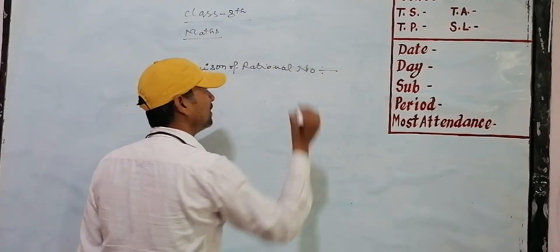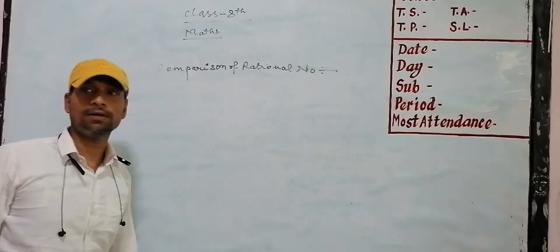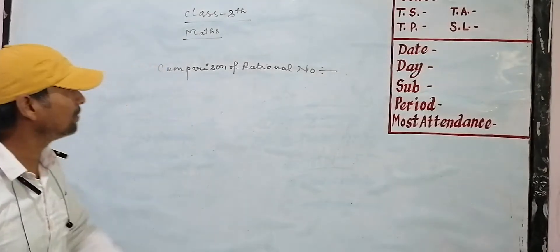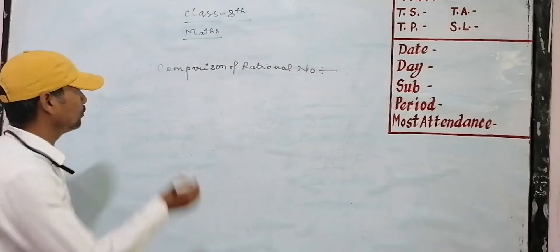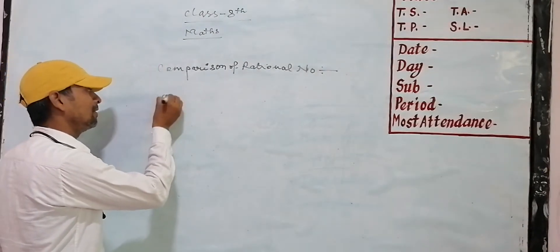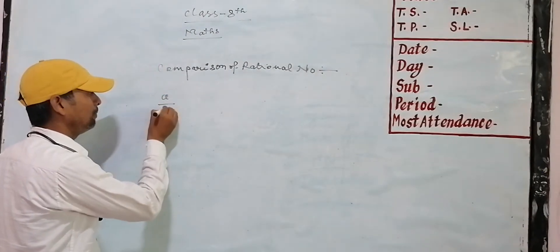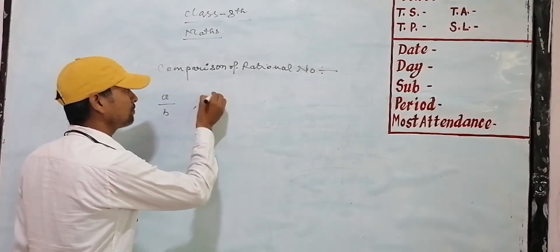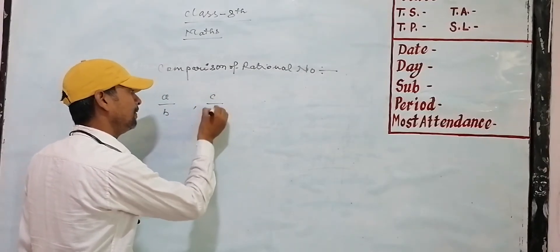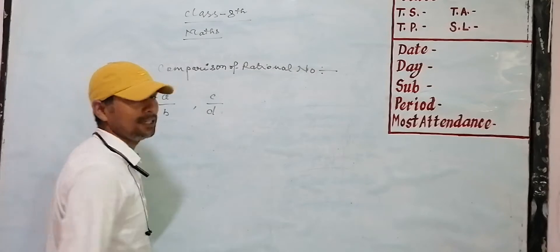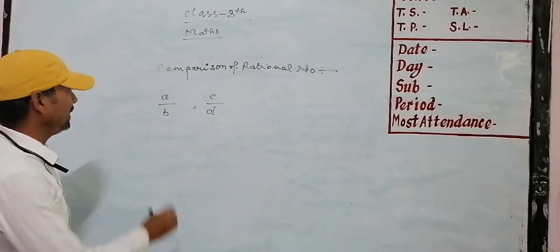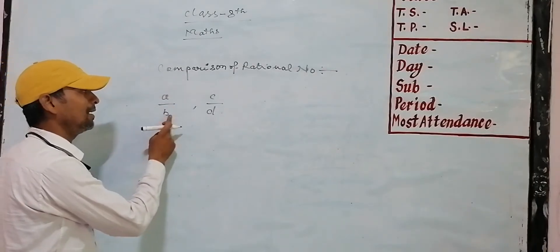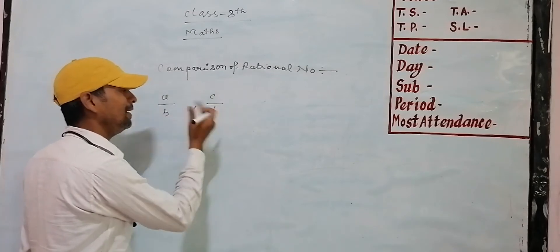If you have a comparison of rational numbers, it will involve 2 rational numbers. Suppose you have a rational number a by b, and a rational number c by b. Now we will compare c by b to a by b — which number is greater?